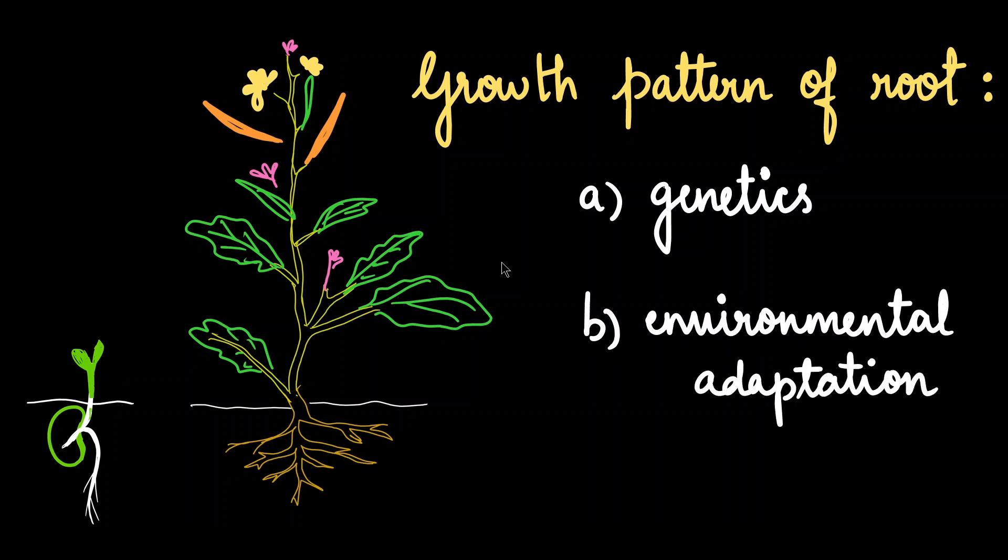The second feature which is important is the environmental adaptation. When a plant grows in a particular area for millions of years, there is change in the climate and changes in the soil conditions as well. All these environmental features have a huge role to play in what type of root a particular plant can have.